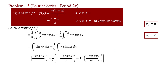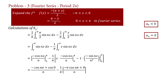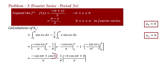Therefore, b_n equal to (minus cos(n·pi) plus cos(0))/n minus (1/pi) times (minus pi·cos(n·pi) plus 0)/n. Since cos(0) equals 1 and the pi's cancel, b_n equal to (minus cos(n·pi)/n) plus (1/n) plus (cos(n·pi)/n). The negative term and the positive cos(n·pi)/n term cancel, therefore b_n equal to 1/n.